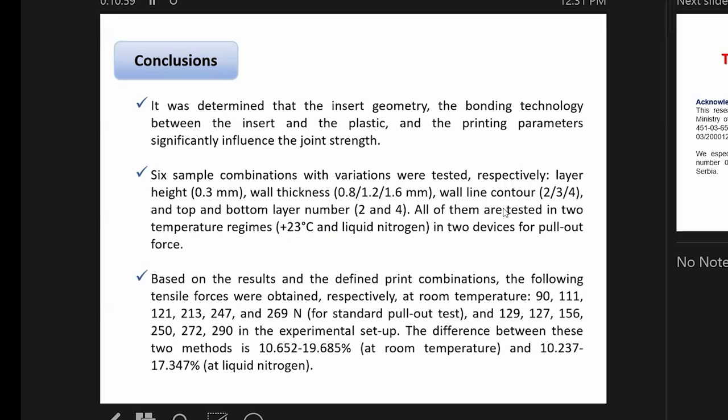Printing parameters are also very important. We used layer height 0.3 millimeters, wall thickness with different values: 0.8, 1.2, 1.6. This means 0.8 is 2 layers, 1.2 is 3 layers, 1.6 is 4 layers, because the basic layer is 0.4 millimeters. Wall line contours are very important, and also top and bottom layer numbers, which were in border conditions of 2 and 4.